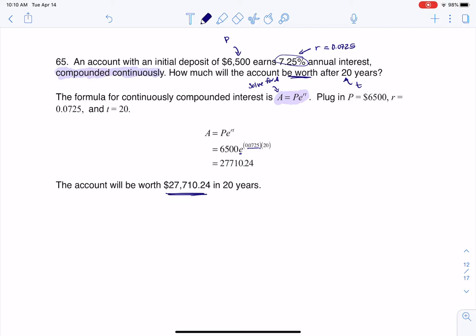So that would be nice. In 20 years, you could have about $27,710.24. You just have to have $6,500 now, find an interest rate or an account that'll give you 7.25% interest, and you need to wait 20 years.